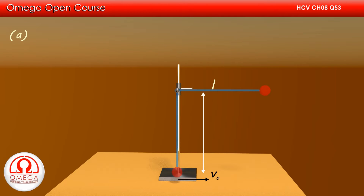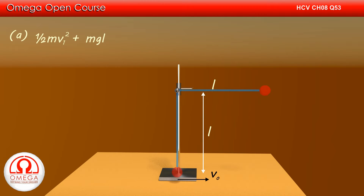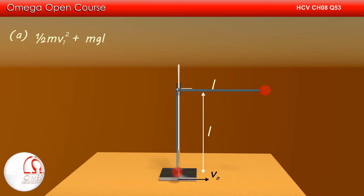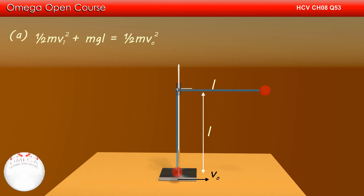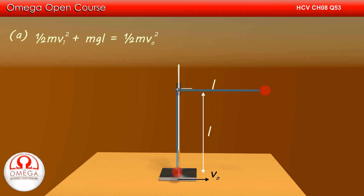Let us denote the speed of the bob at the lowest position by V0, and the speed when the string is horizontal as V1. The kinetic energy at this point is ½mV1². When the string is horizontal, the bob is at height L from the lowest position, so potential energy is mgL. Taking the lowest position as the zero potential line, by conservation of energy: ½mV1² + mgL = ½mV0².